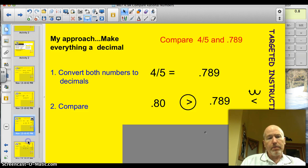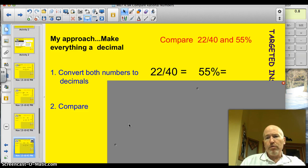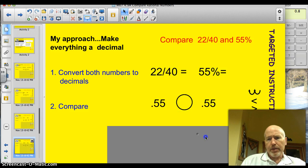All right. Let's have you try one. Here we go. Compare 22/40 and 55%. Go ahead and pause the screen and give it a shot. I'm back. Let's see how you did. Well, if you took and converted 55%, you just moved that decimal over. You got 0.55. If you take 22 and divide it by 40, you get 0.55. Ha! They are equal. Did you get that one right?